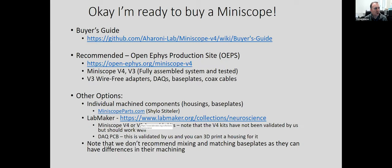The next step is to look at the buyer's guide, which will take you through all the steps you need to purchase a mini scope and all of the equipment and materials you'll need to run these kinds of experiments. Our recommendation is to go through the Open EFIS production site. They have fully assembled mini scopes that have been tested, and we have validated that they are using the latest versions of our designs — Daniel's designs — and that they work. They really are our manufacturing partner.